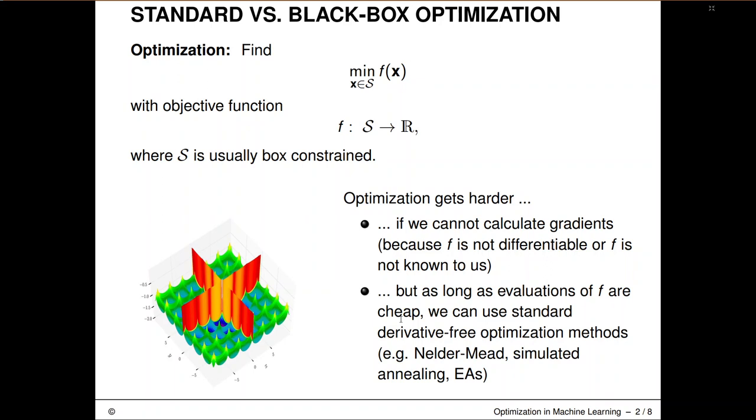So we can run something like Nelder-Mead, simulated annealing, we can run an evolutionary algorithm. And of course, these techniques will perform differently and some of them might be more appropriate to some problems. But we have a pretty rich playing field in front of us, so we can usually make an appropriate choice and then optimize these scenarios.